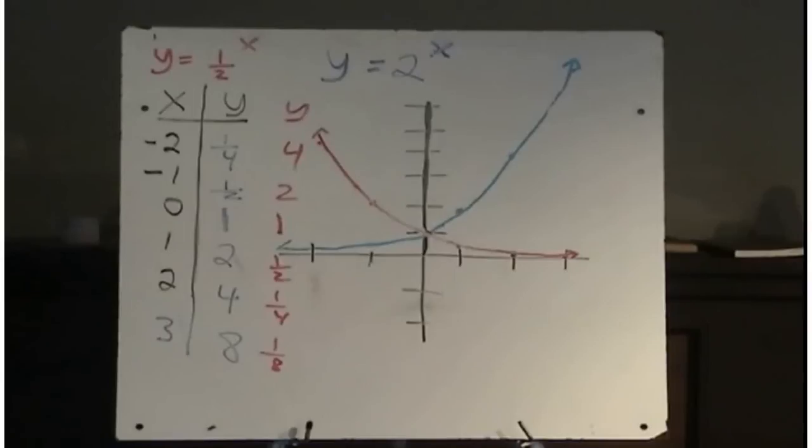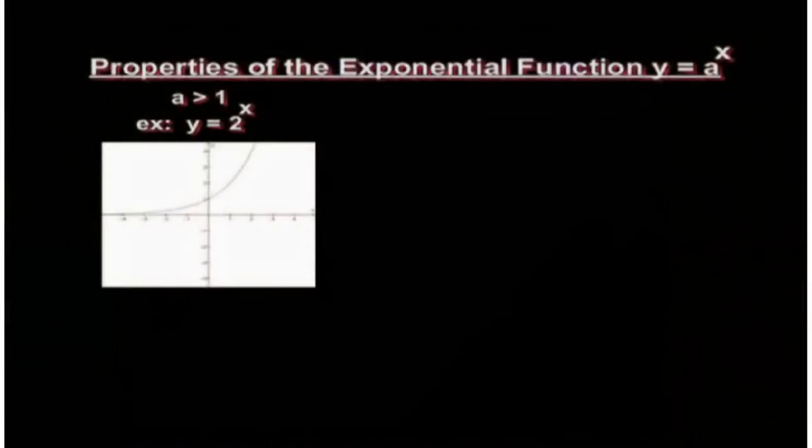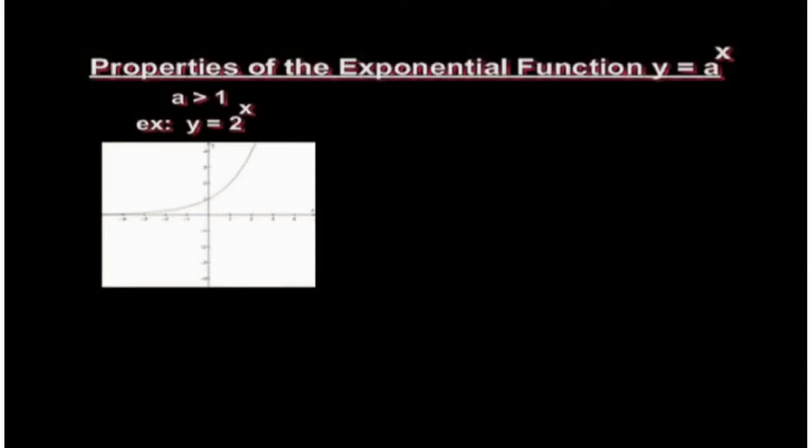So let's summarize the properties of our exponential functions. Looking at the properties of the exponential function y equals a to the x, if a, the base, is a number greater than 1, so for example y equals 2 to the power of x, then the graph will curve up to the right. You could always generate the graph by making a table of values and substituting those points onto your graph.